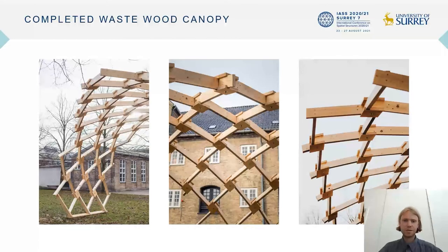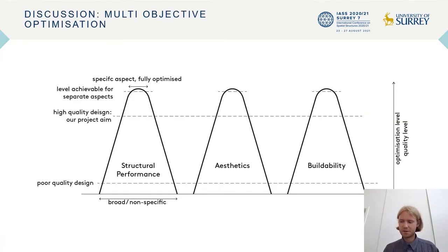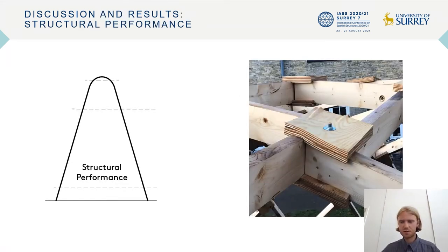Here we see the completed waste wood canopy. Returning to the project aim and multi-objective optimization approach, we successfully demonstrated the structural application of waste timber at an architectural scale. In its most basic form the structure performed as a freestanding structure, and we are currently developing finite element analysis and physical testing of the clamp connections to verify their performance in more detail. During disassembly we had an interesting failure in some of the connections where the stresses were too great for the plywood plates, which we think is due to rain and having not used exterior grade plywood.